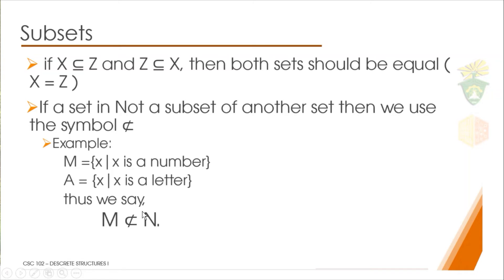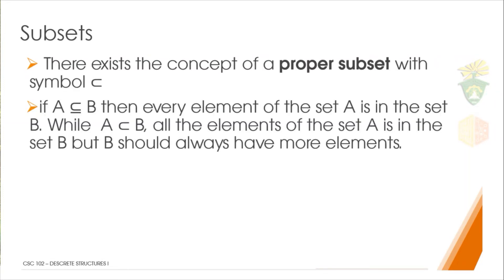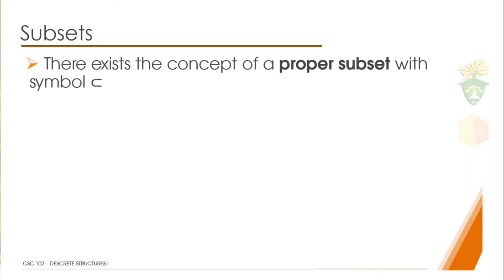Apologies for the wrong representation on the slides. The point is that M is not a member of the set of letters. Assuming A equals N here, we see that there could be no number found in the set of letters, meaning that M is not a subset of N.